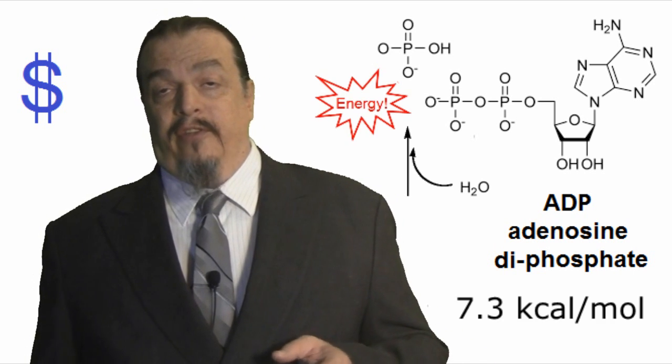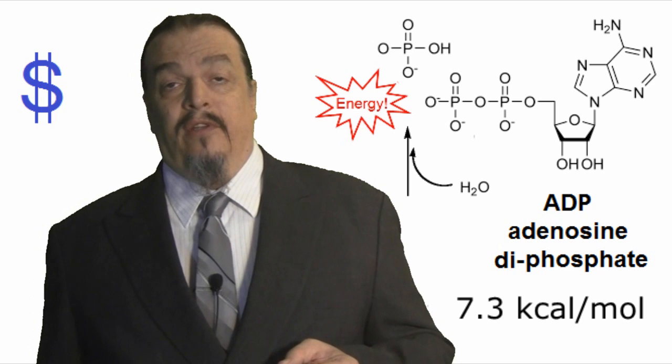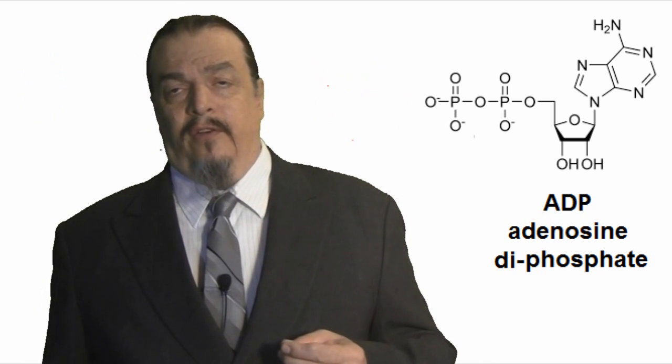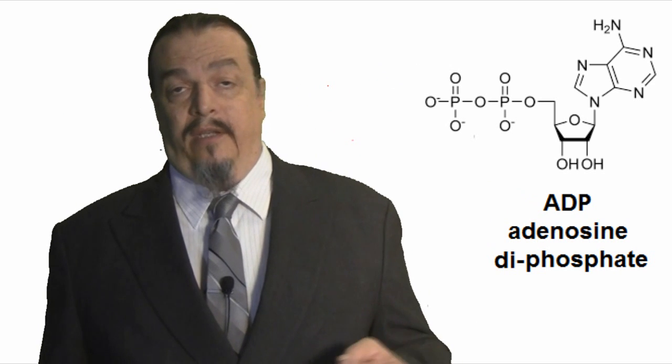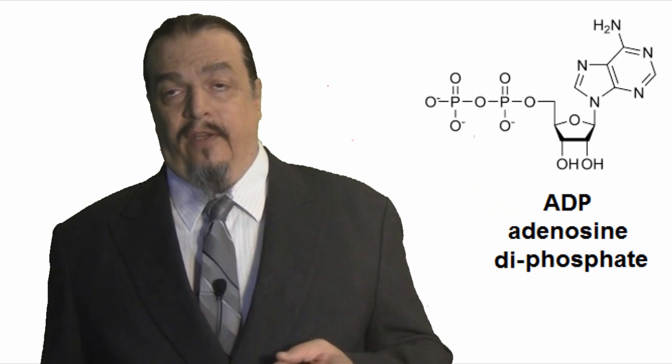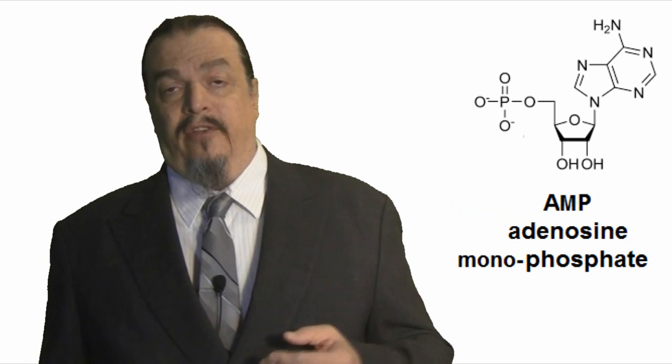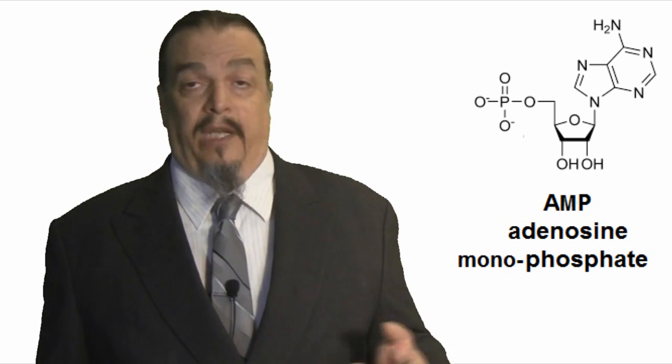These are high-energy bonds, and 7.3 kilocalories per mole of energy are released whenever the bond is broken. If you break one phosphate group off the molecule, it's called ADP, or adenosine diphosphate, di meaning two. If only one phosphate group is left, it's called AMP, adenosine monophosphate, mono meaning one.